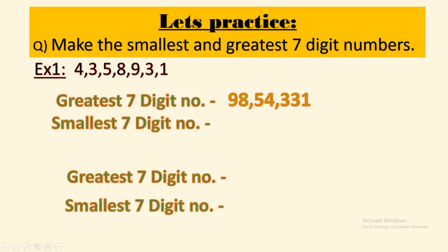98 lakh 54,331. For the smallest, we place the smallest digit first — ascending order — so 1, 3, 3, 4, 5, 8, 9, giving us 13 lakh 34,589. Now let's go for the next one: greatest and smallest seven digit number.